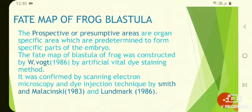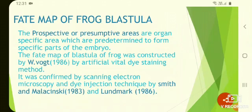Before discussing the fate map of frog blastula, I will explain its significance. Fate maps play a very significant role in clearly understanding gastrulation, but they do not imply that the blastula is a mosaic of areas that differ from one another in their biochemical architecture. In fact, they represent only a description of what particular areas are destined to become, not what they currently are. Overall, fate maps help us understand the role of gastrulation.